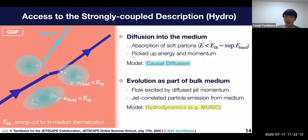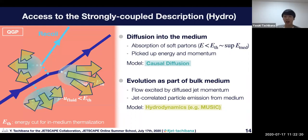The energy and momentum put into the hydro can induce a flow because they're excited by diffused energy and momentum. This induces jet correlated particle emission from the medium. So diffused energy and momentum evolved completely together with the bulk medium. We need to use hydrodynamics.